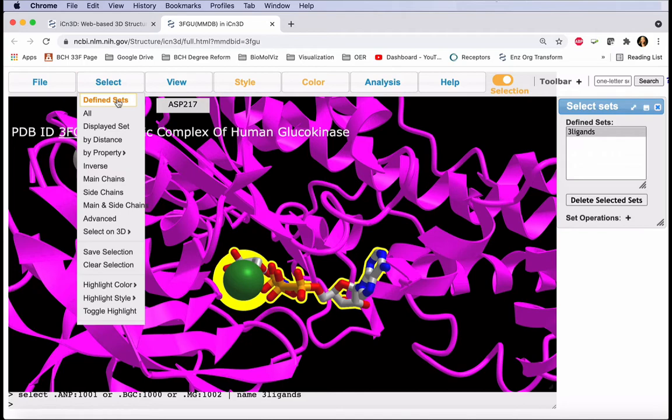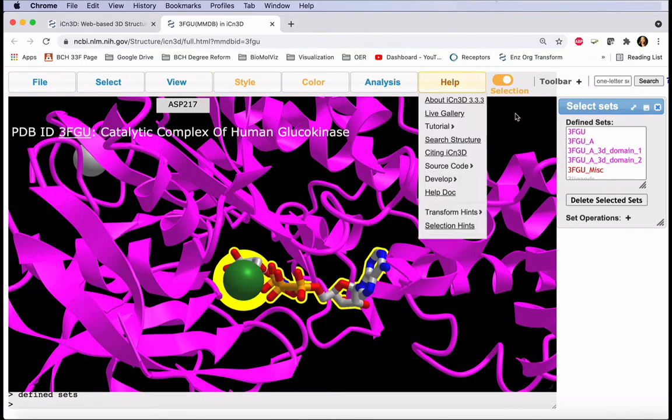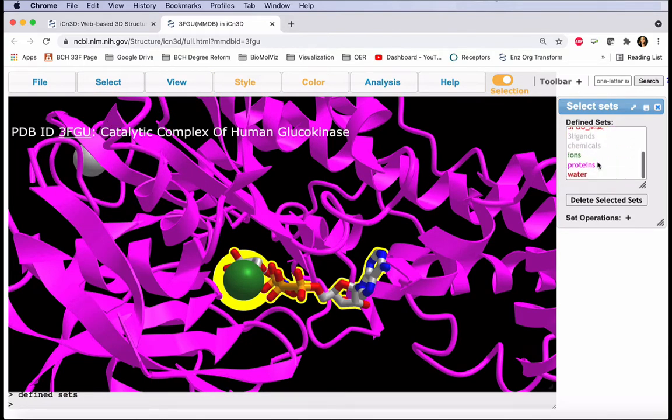There are other defined sets, so if we go to the Select menu and click again, we'll see a longer list of presets, but our Three Ligands is also here.